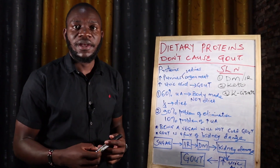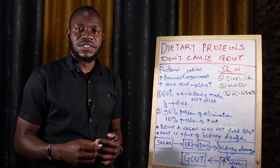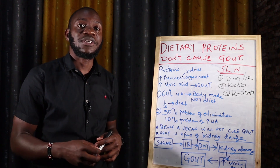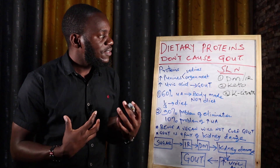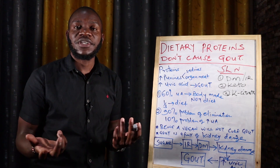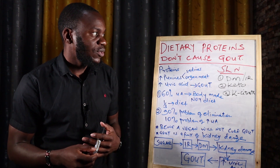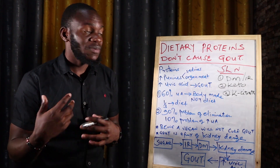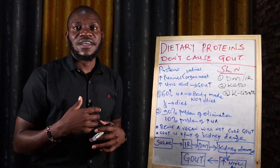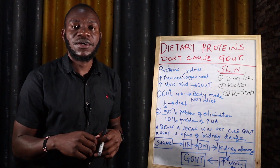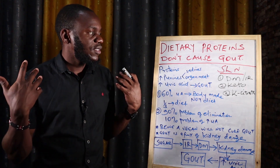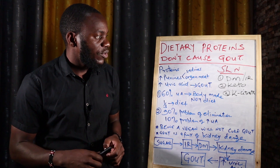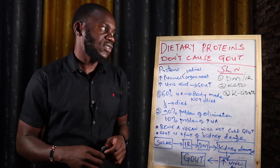Gout is basically an inflammatory condition of the joints that causes a lot of pain. It comes from accumulation of uric acid in your blood. When you have a high content of uric acid in your bloodstream, it precipitates in your joints and those crystals cause pain — in your shoulders, hips, wrists, and extremities.